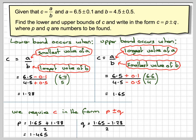And q is the difference between these two divided by 2, so it's going to be 1.65 minus 1.28 divided by 2, which gives me 0.185. So my answer, c, will be 1.465 plus or minus 0.185.